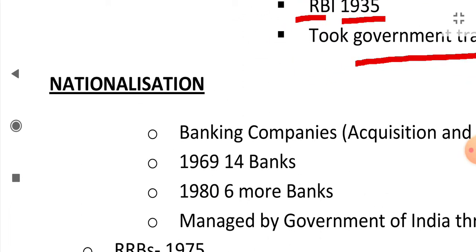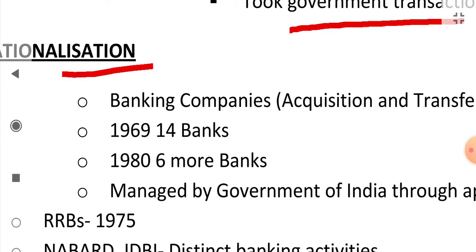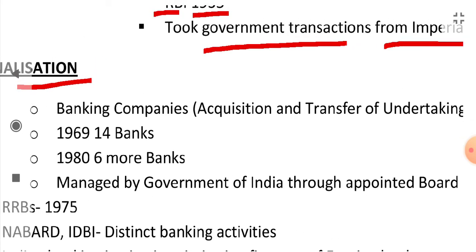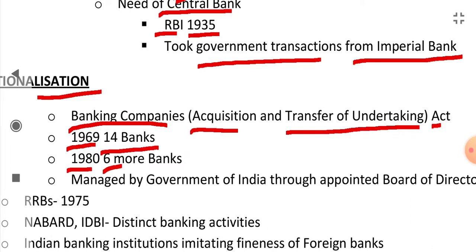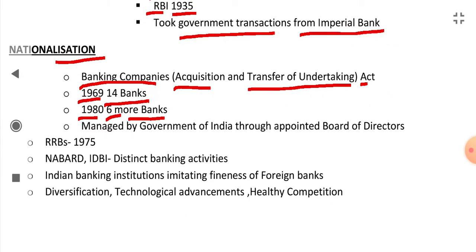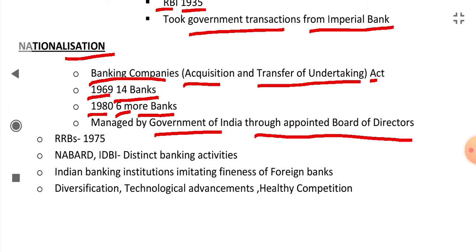The next major development in India was the nationalization of banking companies. It was done through the Banking Companies Acquisition and Transfer of Undertaking Act. Through this Act, in 1969, 14 banking companies were nationalized, and in 1980, six more banking companies were nationalized. These nationalized banks are managed by the Government of India through an appointed Board of Directors.